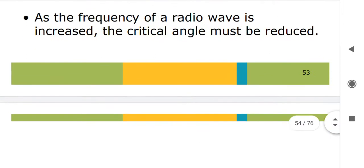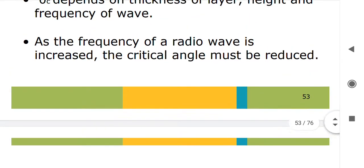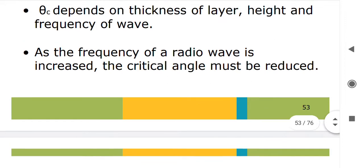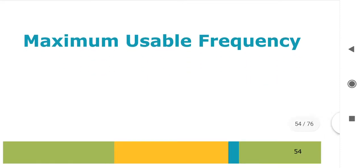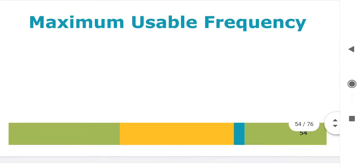As the frequency of the radio wave is increased, the critical angle must be reduced. This line indicates the inverse relationship between the frequency of the radio wave and the critical angle. The next parameter is maximum usable frequency.